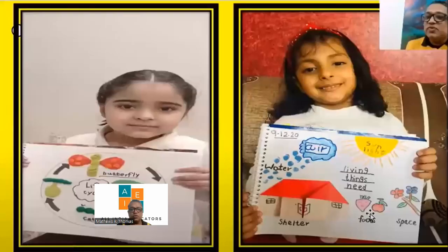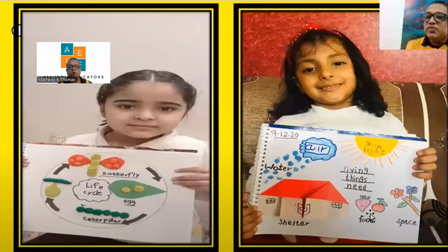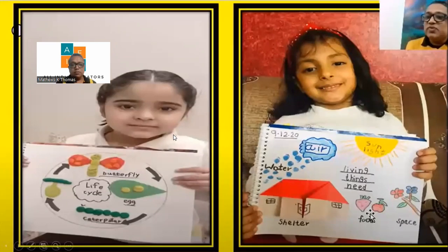Thanks to some teachers who shared this — students have made a life cycle of a butterfly. These are primary kids. See the diagram: there's a house made, with air, water, living things, food, space — all of that. With the help of diagrams they are demonstrating what is important for us to live: air is important, water is important, shelter is important. With the help of a small project, all this comes out, and the child will never forget these things.